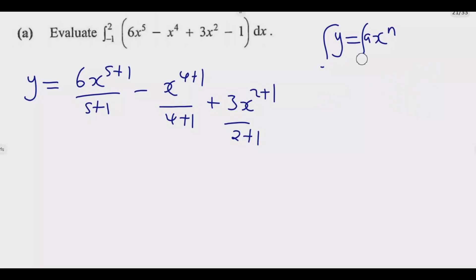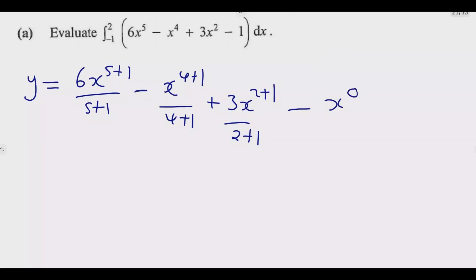For the constant term 1, we treat it as x to the power 0, so the new power is 0+1 over 0+1. Because we are looking for the definite integral, we are not going to add a constant C — we only add C if we are not evaluating a specific interval.